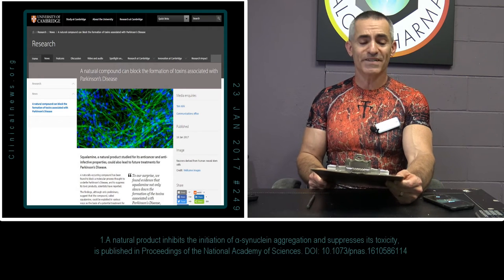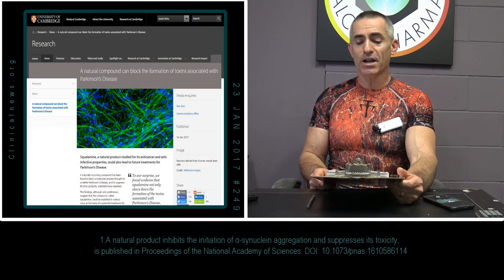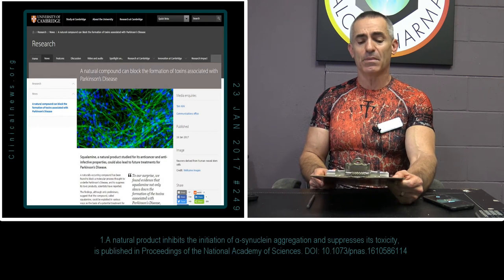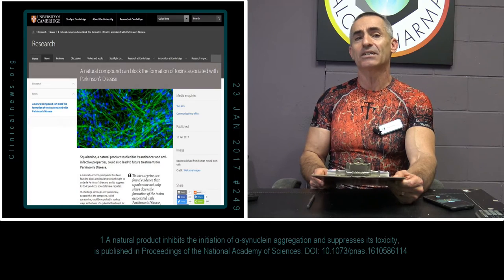A natural compound can block the formation of toxins associated with Parkinson's disease. Squalamine, a naturally occurring compound, has been found to block a molecular process thought to underlie Parkinson's disease and suppress its toxic products.